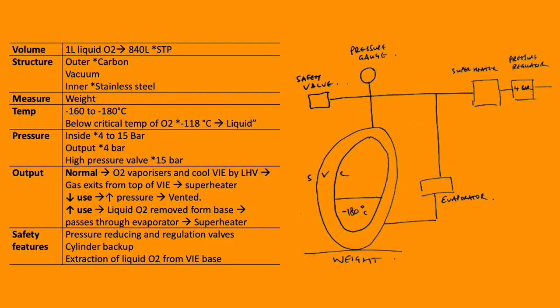It stores oxygen under the pressure of 4 to 15 bar at a low temperature of minus 160 to minus 108 degrees C. There's a pressure release valve set at 15 bar so excess gas is vented. You can measure the content of the VIE by weighing the VIE.